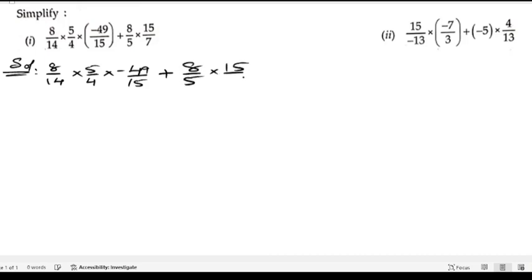So here the first three numbers are forming one term and they are separated by a positive sign from these two. The better way to do this problem is to start with cancellation.